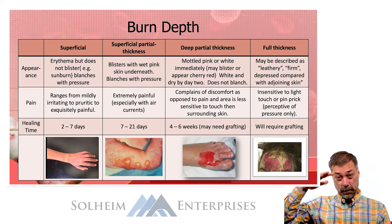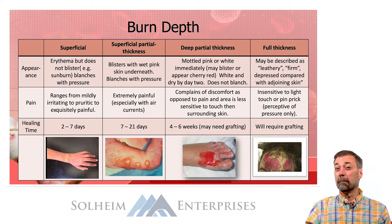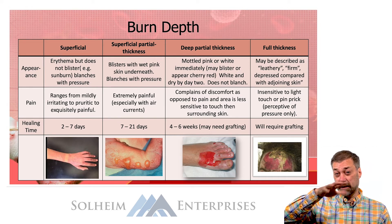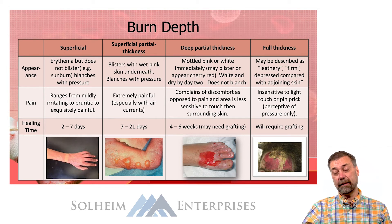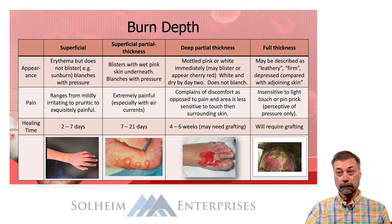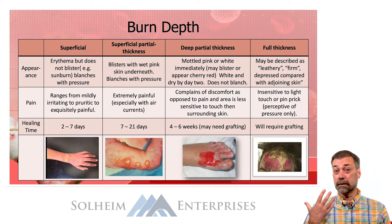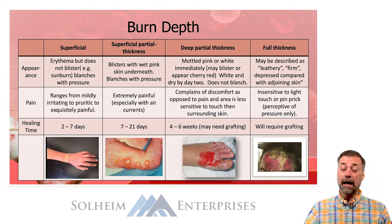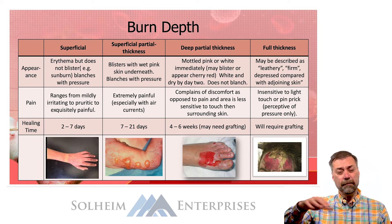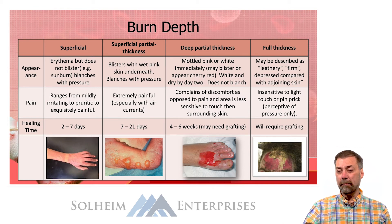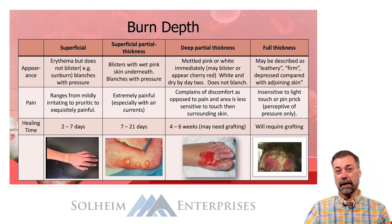A deep partial thickness burn, which burns all the way down to the basement membrane of the dermis, may appear either a mottled pink or white. It may or may not blister, depending on whether enough skin remains intact over the top to capture fluid. Generally after a day or two, because circulation is so poor, the burn will take on a whitish appearance and will not blanch. These patients may not have as deep pain because the nerve ends themselves have been burnt, so instead of exquisite pain, they may notice discomfort rather than pain.